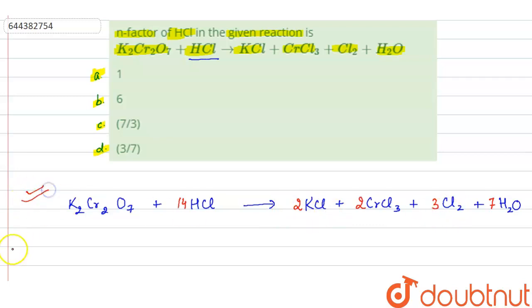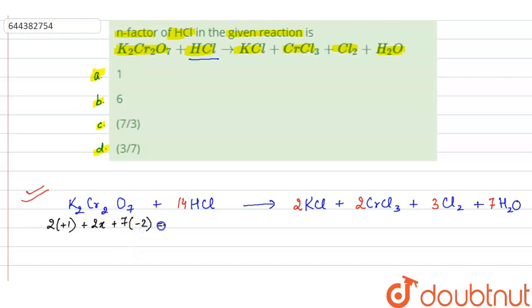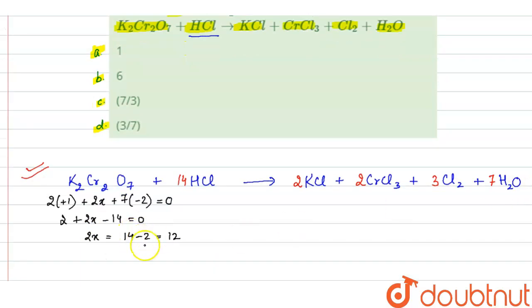Now let us find the oxidation state of chromium in K₂Cr₂O₇. Let the oxidation state of chromium be x. We have 2 potassium, so 2 × (+1) + 2x + 7 × (−2) = 0. From here, 2 + 2x − 14 = 0, so 2x = 12, giving x = +6. Chromium is present in the +6 oxidation state in K₂Cr₂O₇.